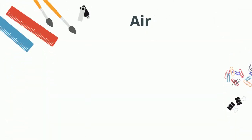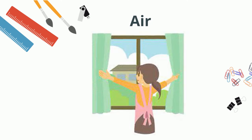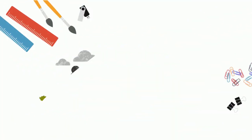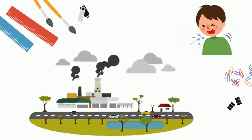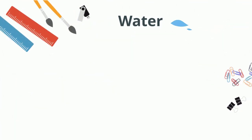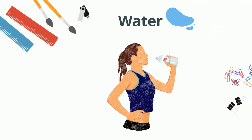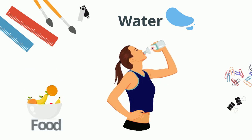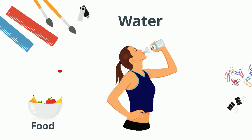Air: we need fresh air to breathe — we will die without air. If there is dust or smoke in the air, we may fall ill. Similarly, we need water and food to stay alive. These are like fuel to our body.